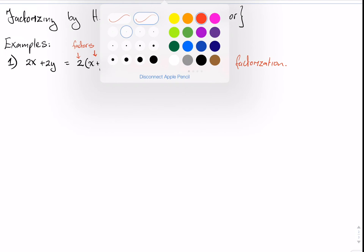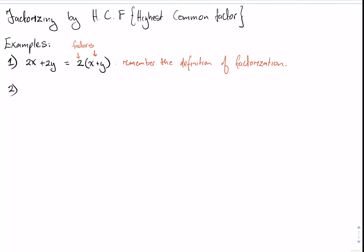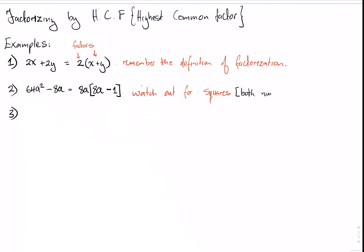Example two: we have 64a squared minus 8a, which equals 8a multiplied by 8a minus 1. It's important to watch out for squared numbers — 64 is a square of 8, so 8 goes into 64 eight times. Example three: 25x minus 10 is the same as 5 multiplied by 5x minus 2.